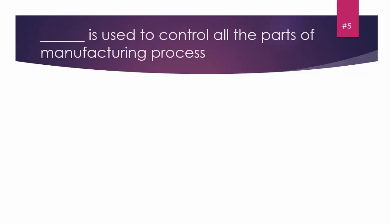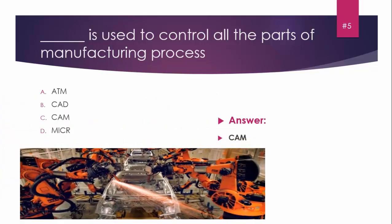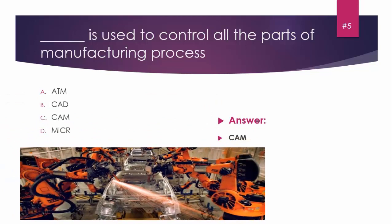MCQ number five: Blank is used to control all parts of the manufacturing process. Options: A) ATM, B) CAD, C) CAM, D) MICR. The answer is CAM - Computer-Aided Manufacturing. You can see in the picture, in a car factory, computers are giving instructions, designing the car.